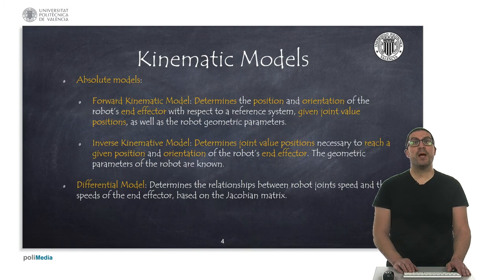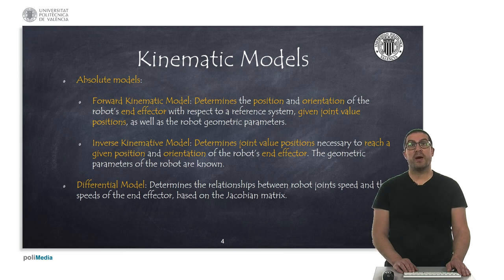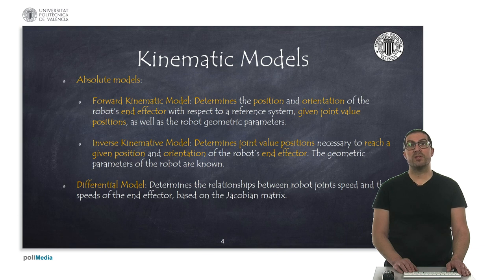We can distinguish two types of kinematic models: absolute and differential ones. The absolute models are expressed through absolute variables, such as joint angles or joint positions, or the position and orientation of the end effector, while in differential models there is a relationship at the level of velocities, whether linear or angular.